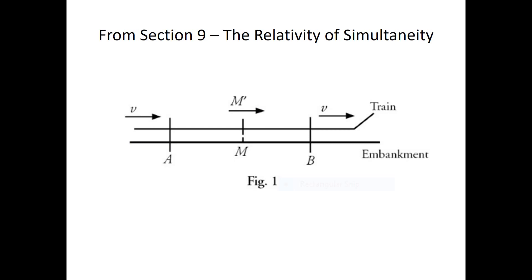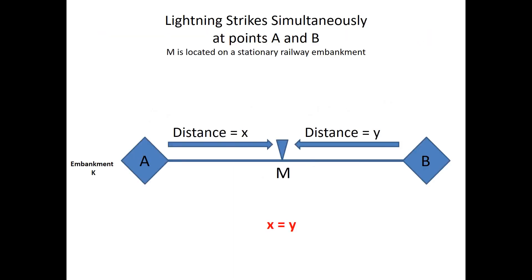Einstein offers an illustration which we will step through. This adapted diagram shows the scenario described by Einstein. The two lightning flashes strike simultaneously at A and B on the embankment. An observer is situated at point M, the midpoint between A and B, so that distance X equals distance Y. According to the law of propagation of light, light travels at a constant speed. Therefore, the light from A will arrive at M at the same time as light travelling from B, and the observer perceives the two flashes at the same time. The two lightning strikes are thus simultaneous.